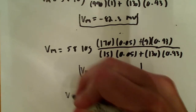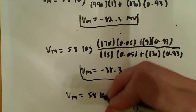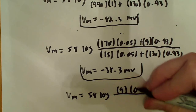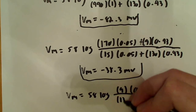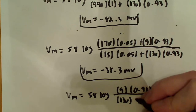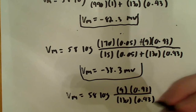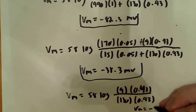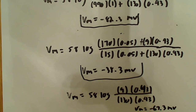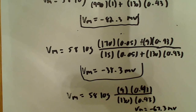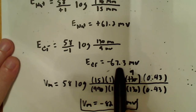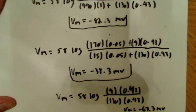That would just be VM equal to 58 log, and remember: 9 for the intracellular chloride multiplied by 0.43, and 130 for outside the cell for chloride multiplied by 0.43. What you wind up with is a resting membrane potential of negative 67.3 millivolts. As you can see, this is the exact same value we got for the Nernst potential from the data set earlier — equilibrium potential negative 67.3, negative 67.3. They match perfectly.